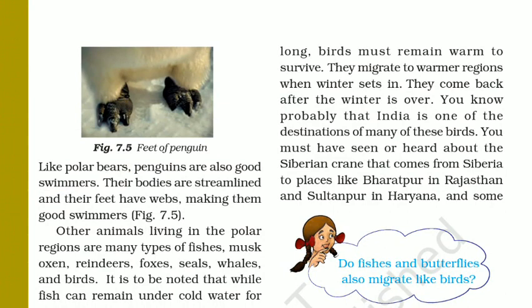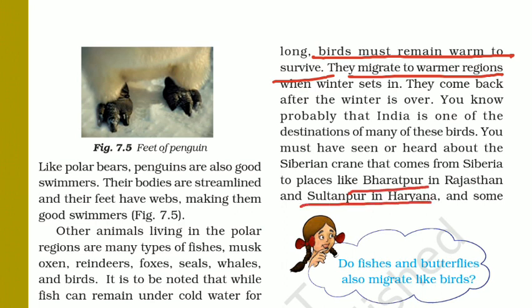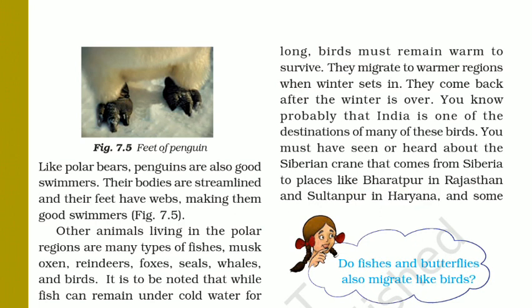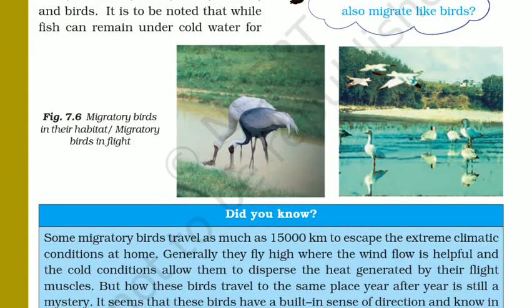The bird feather is not as thick as that of the other animals, so that is why birds need a warmer condition. To find a hospitable condition they move from one place to another. You have also heard that Siberian cranes migrate from Siberia to India every year — to places like Bharatpur in Rajasthan and Sultanpur in Haryana. They migrate because their skin conditions — they do not have that kind of white or thick fur — make the harsh condition inhospitable for them.